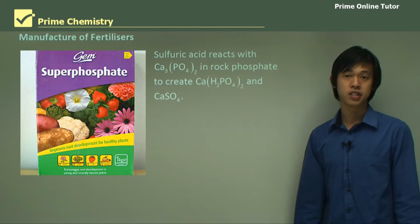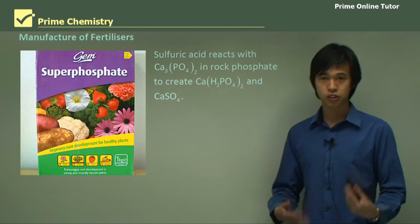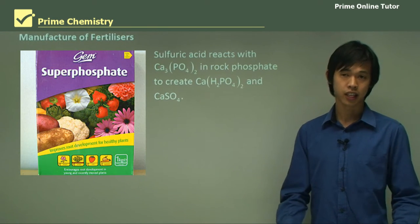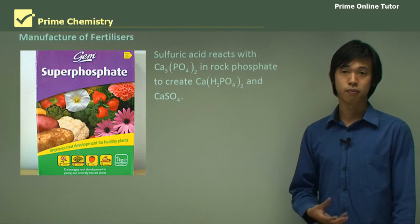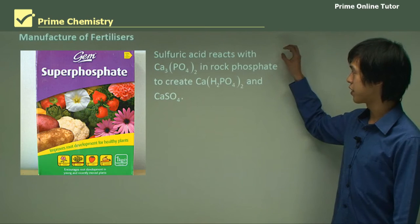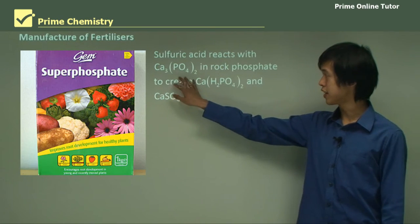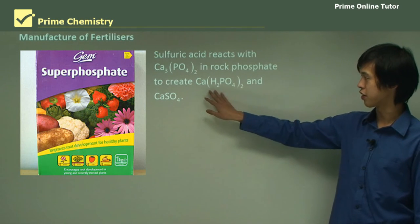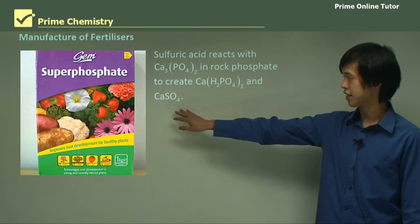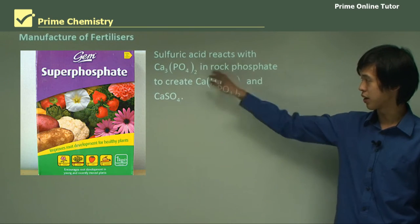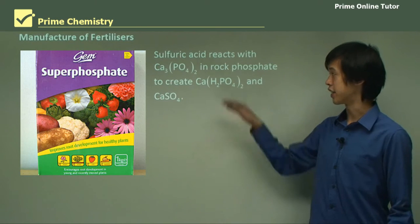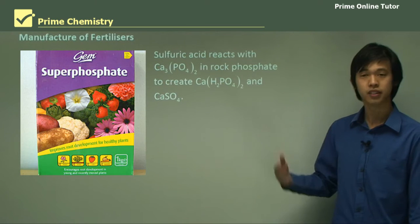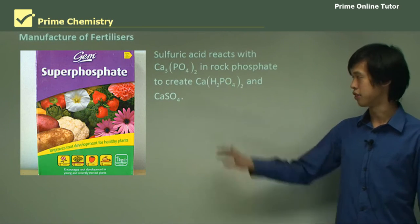One major use is to produce fertilizers. While we usually think of nitric acid and ammonia as the fertilizer-producing chemicals, sulfuric acid also has a place in the fertilizer industry. We react sulfuric acid with calcium phosphate — rock phosphate — to create CaH₂PO₄ and calcium sulfate. To obtain rock phosphate, we mine it, similar to how we mine sulfur.